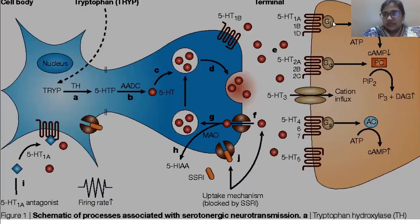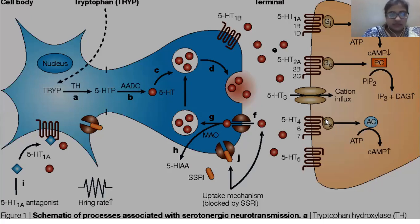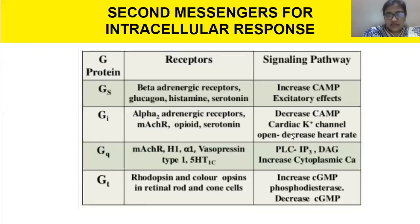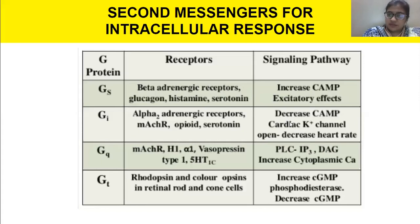These receptors are linked to GI — inhibitory ones — and then GQ and GS. Referring back to G-protein coupled receptors discussed previously in detail, this slide summarizes what exactly can be the effect overall, to help you learn in a better way.